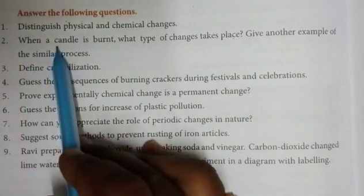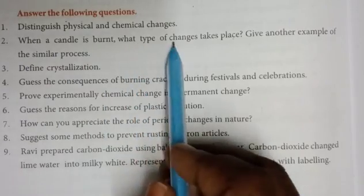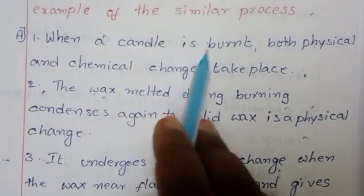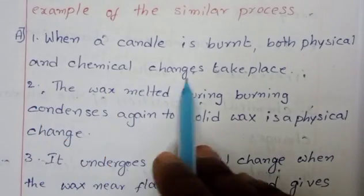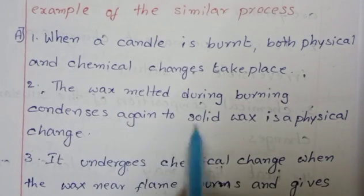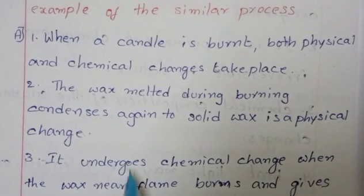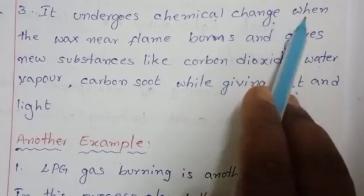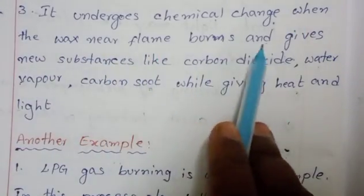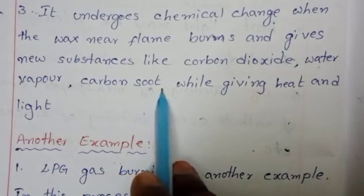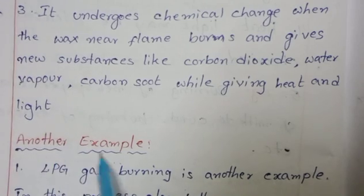When a candle is burnt, what type of changes take place? When a candle is burnt, both physical and chemical changes take place. The wax melted during burning condenses again to solid wax — that is a physical change. It undergoes chemical change when the wax near the flame burns and gives new substances like carbon dioxide, water vapor, and carbon soot while giving heat and light.